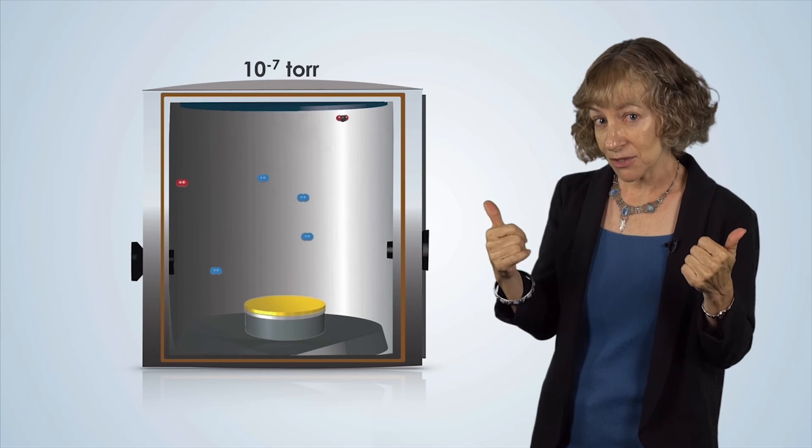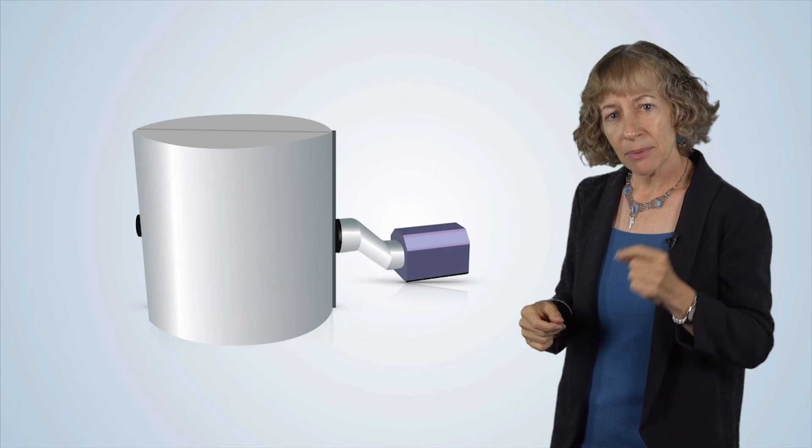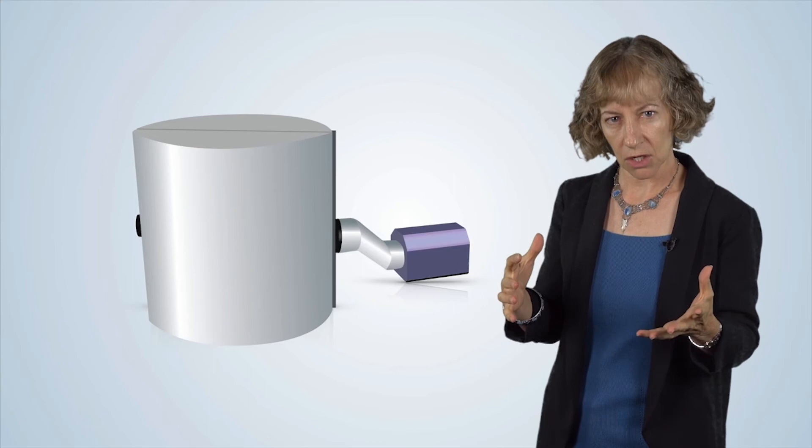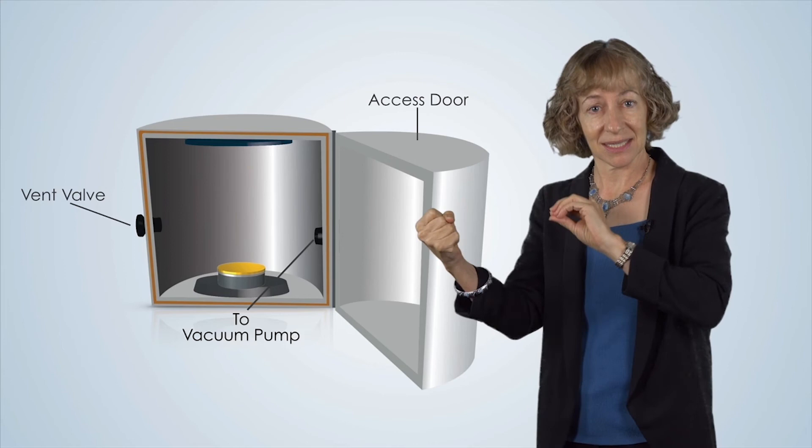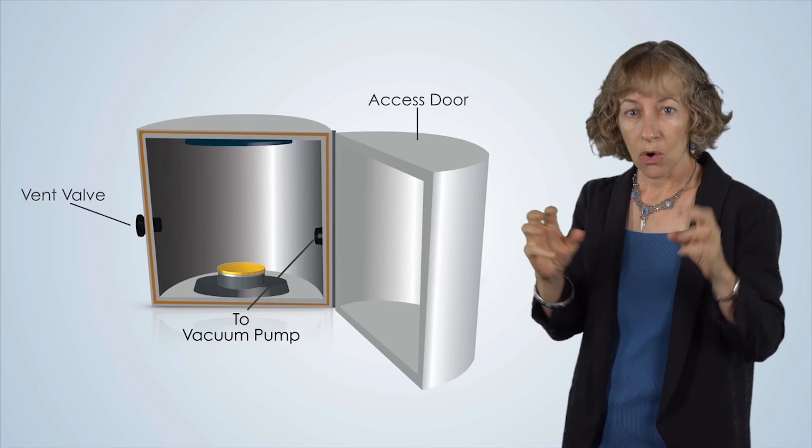To establish a vacuum, first we need a sealed chamber — typically a solid metal or glass enclosure. In order for the chamber to be of any use, it needs to have an opening of some sort, for example a door or port that can be opened for putting samples in and taking samples out. The door needs to be airtight when it's closed, or air will simply leak back into the vacuum system when we pump it out. So the door needs a seal, or gasket, to make it vacuum tight.